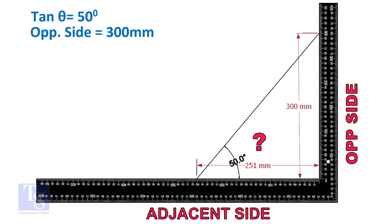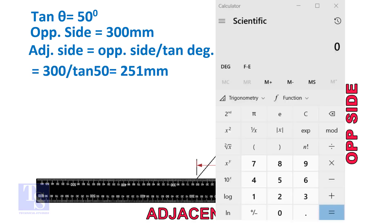You can take any suitable dimension as required. Adjacent side is equal to 300 divided by TAN 50 degrees. Let us calculate.